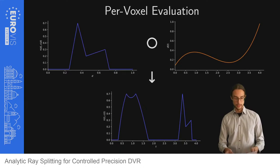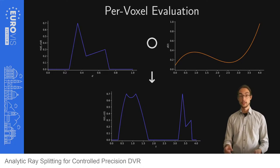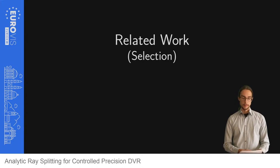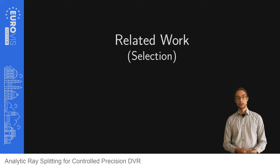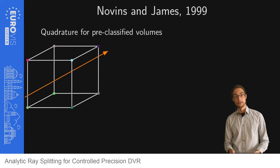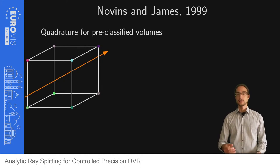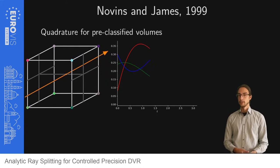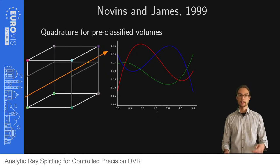We propose a ray splitting algorithm that can analytically compute this piecewise cubic function. Before we explain our method in more detail, we revise some related work that also attempts to solve the volume rendering integral more accurately. Novenson et al. proposed in 1999 a high quality quadrature method for pre-classified volumes. In pre-classification the transfer function is applied at the vertices of the volume, and these colors are then interpolated trilinearly, giving rise to a single cubic function of the colors along the ray, which is then solved via quadrature.